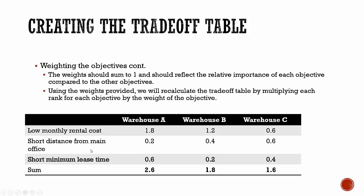The weight for distance was 0.2, and you can see how each of the ranks in the previous table are multiplied by 0.2, and the same thing for short minimum lease. Now we sum them up and get a different outcome. Since warehouse C had a lower rent and we put more weight on that than the other objectives, it now has the lowest sum and is our preferred choice.